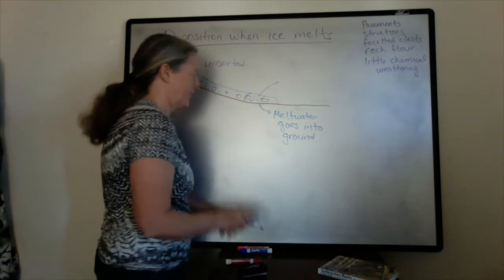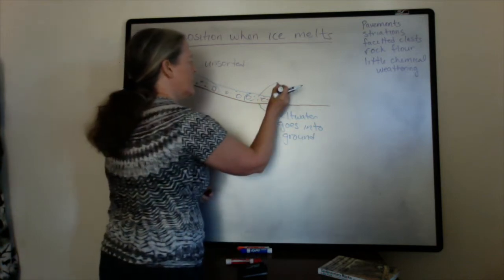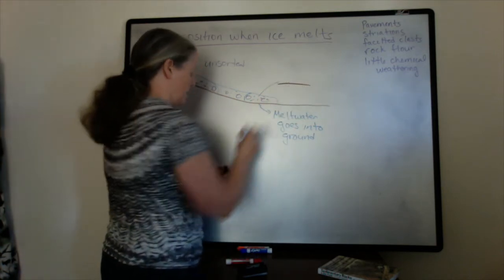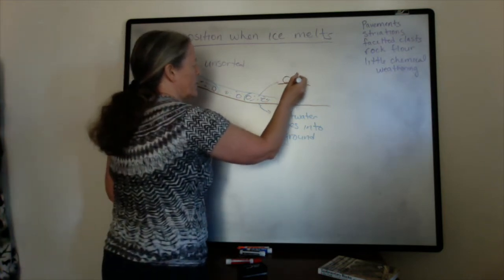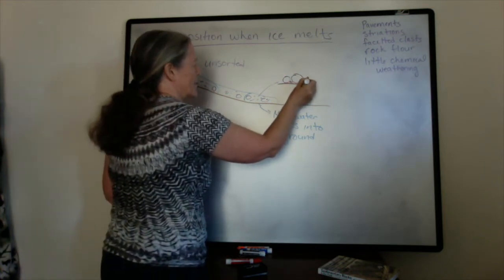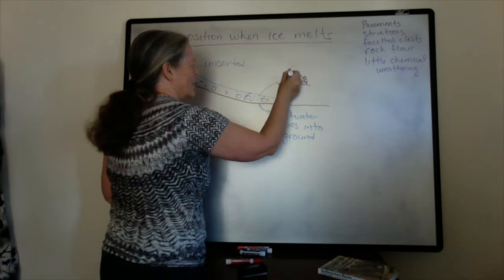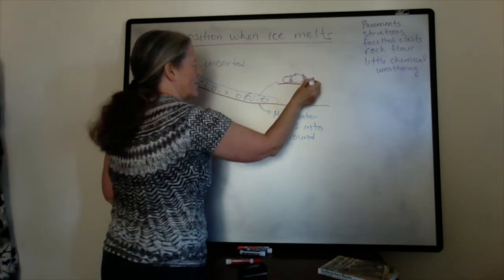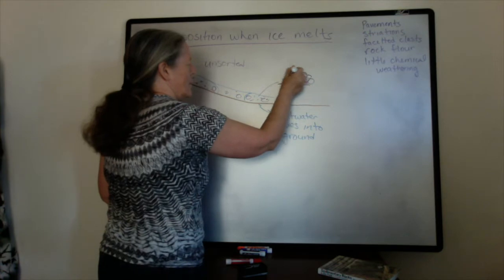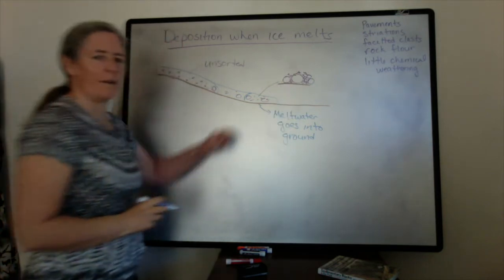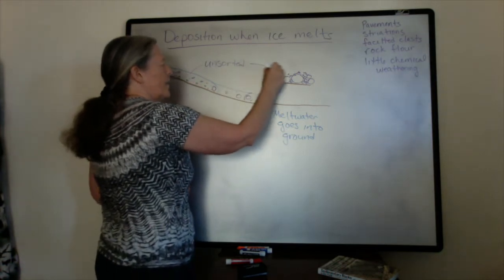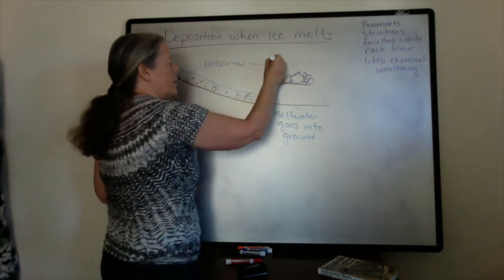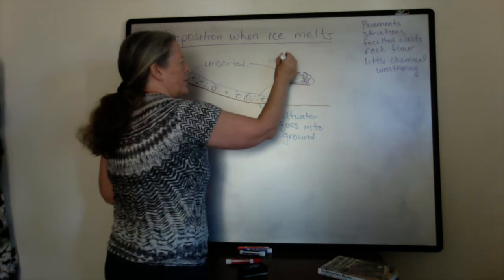All of those grains just get accumulated in a pile. So this would produce a deposit where we have all sorts of grains in an unsorted mix. So if the ice just melts and there's no transport by liquid water...